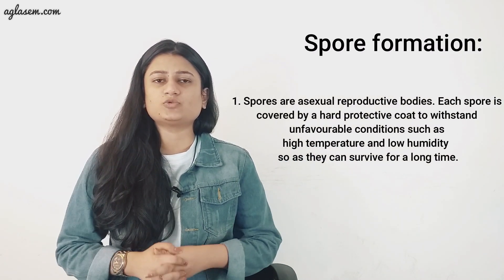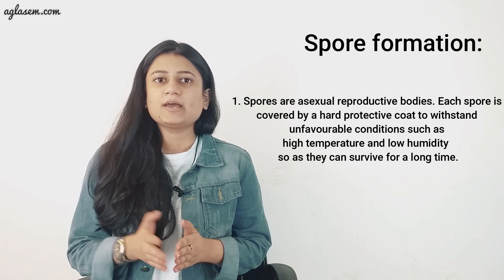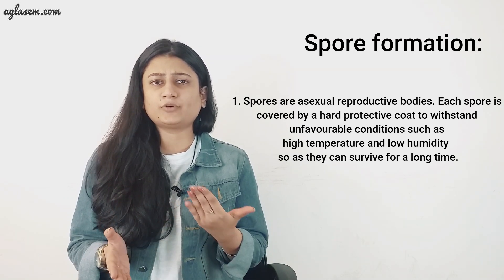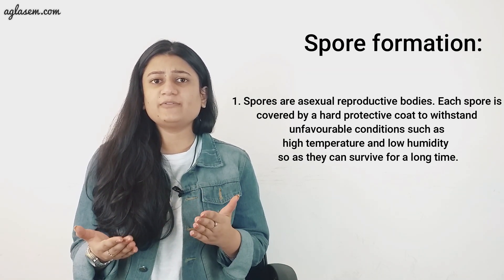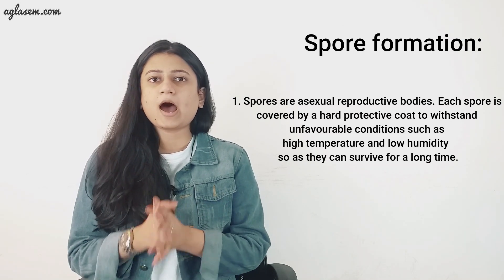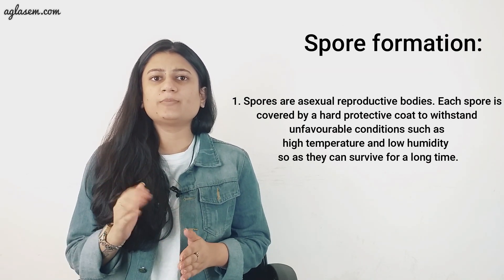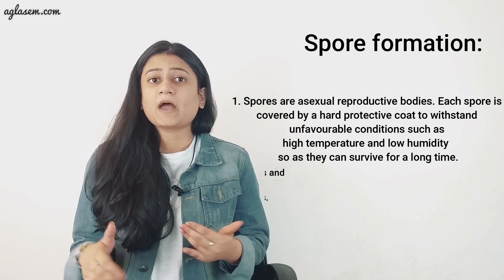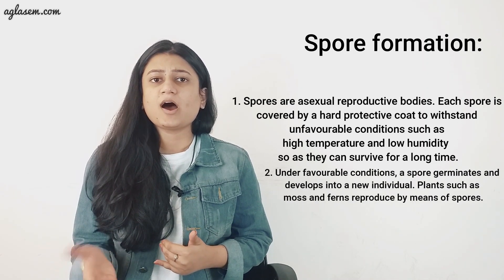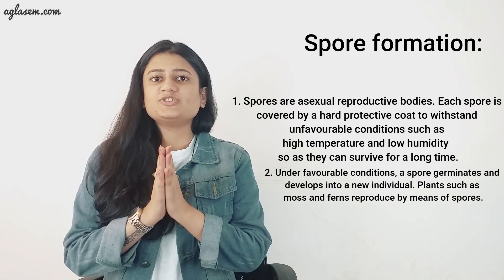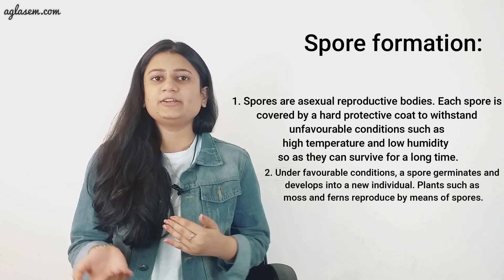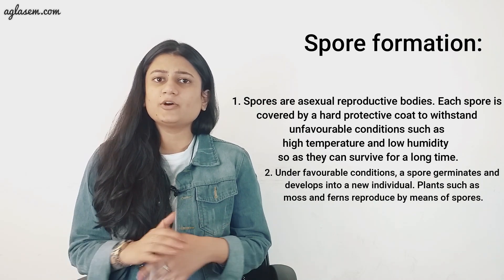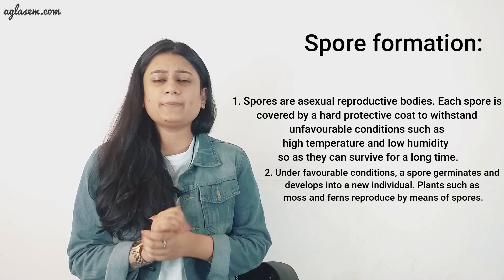Spores are asexual reproductive bodies. Each spore is covered by a hard protective coat to withstand unfavorable conditions such as high temperature and low humidity, so they can survive for a long time. Under favorable conditions a spore germinates and develops into a new individual. Plants such as moss and ferns reproduce by means of spores.